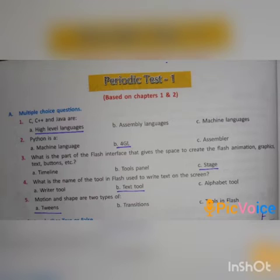Third one: What is the part of the Flash interface that gives the space to create the Flash animation graphics, text, buttons, etc.? Option A: timeline, option B: tools panel, option C: stage. Answer: option C, stage.